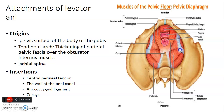The levator ani muscle originates from the pelvic surface of the body of pubis, the tendinous arc — which is a thickening of the parietal pelvic fascia overlying obturator internus — and the ischial spine. Those are the three origins. It inserts onto the central tendon of the perineum, the wall of the anal canal, the anococcygeal ligament, and the coccyx.